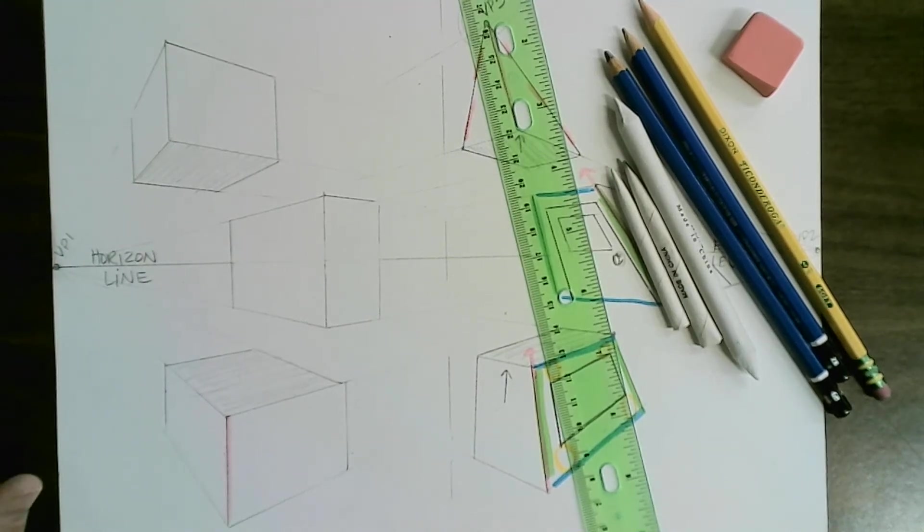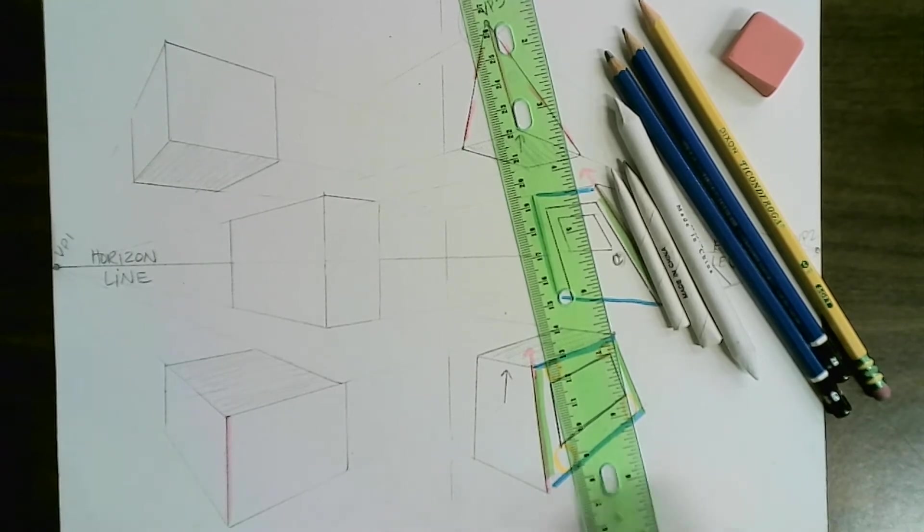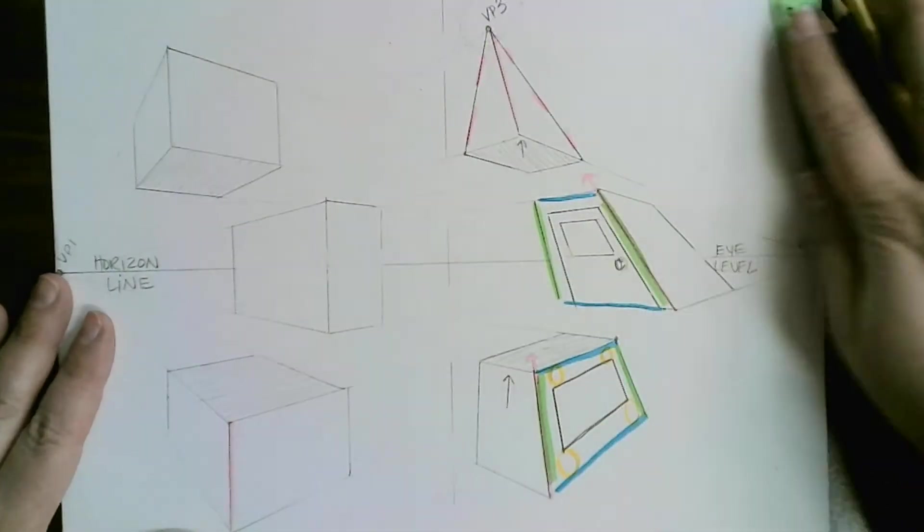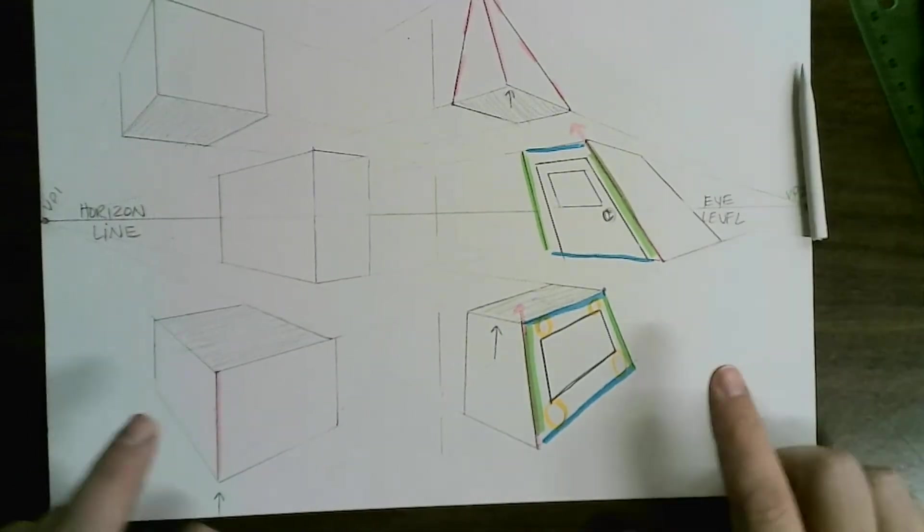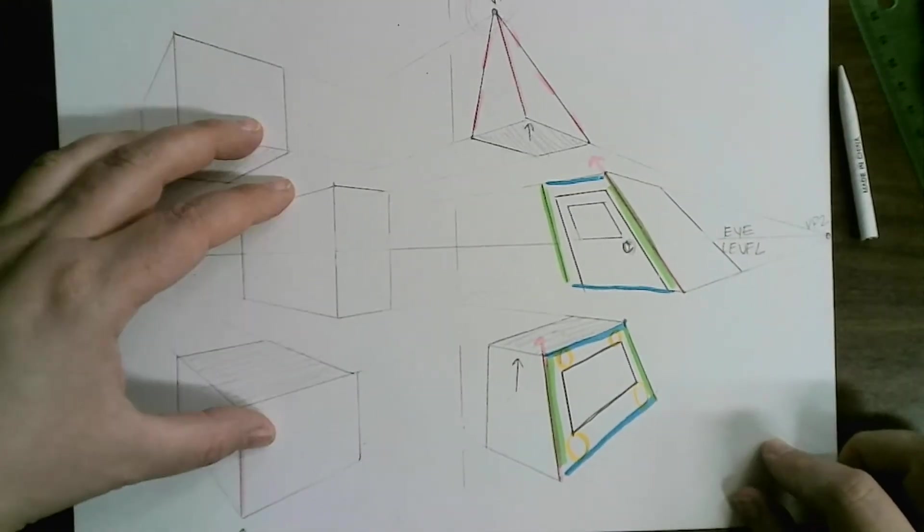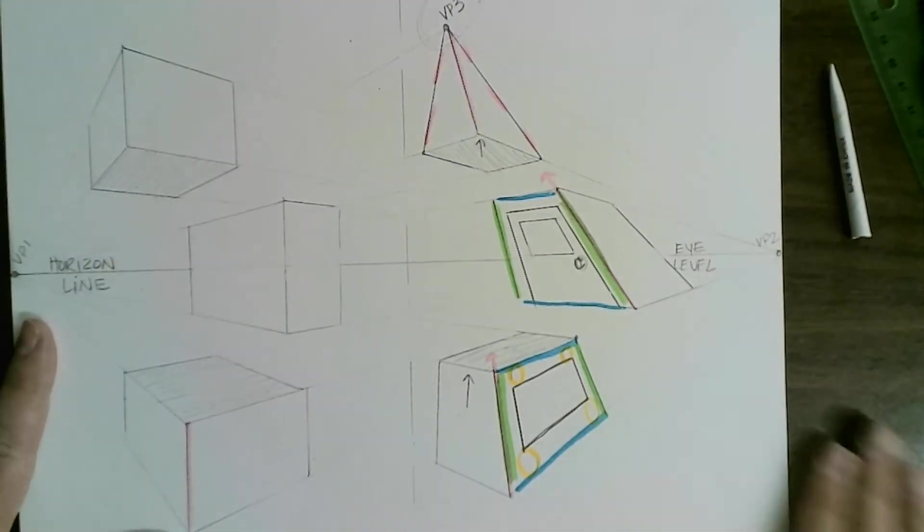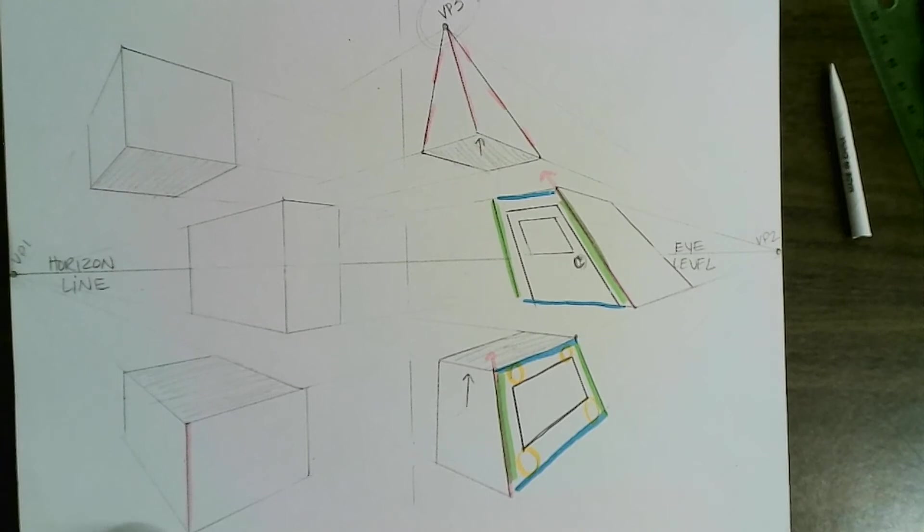Hello and welcome to your demonstration on shading with a light source and three-point perspective. For this practice you're going to need your two and three-point practices from Google Doc 11 where we reviewed two-point and then learned three-point. We're going to use this one to practice shading initially.